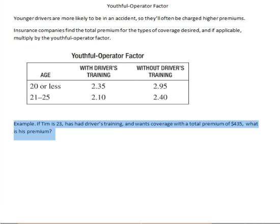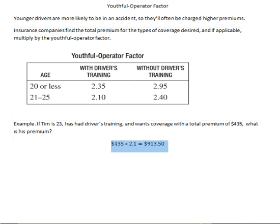So for example, if Tim is 23, has had driver's training, and wants coverage with a total premium of $435, what is his actual premium? Well, we'd take $435 and look up our youthful operator factor in the table. He's between 21 and 25 and has had driver's training, so our youthful operator factor is 2.1. $435 times 2.1 is $913.50.